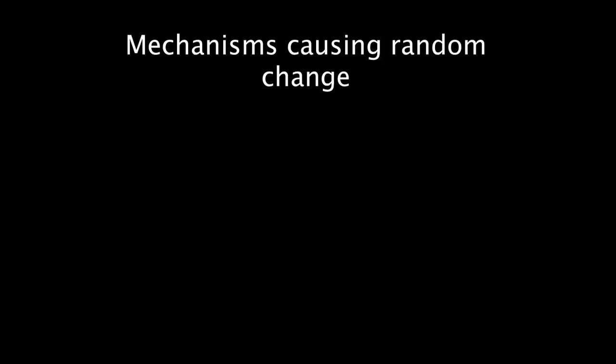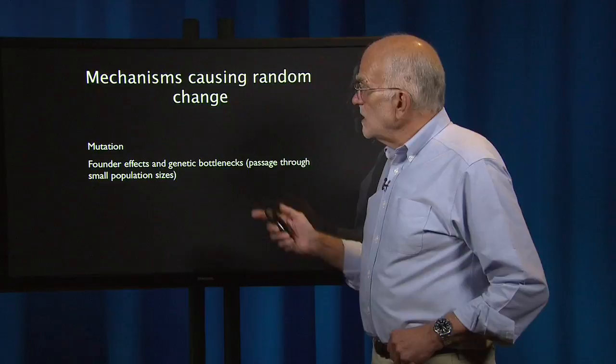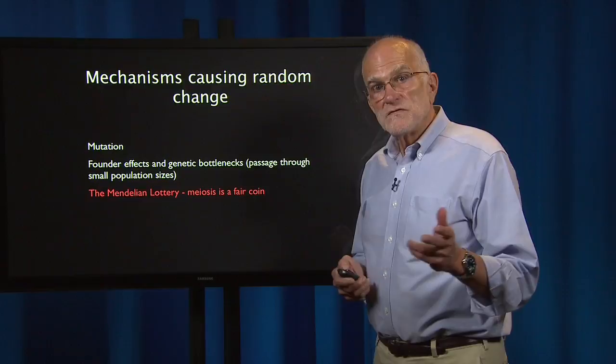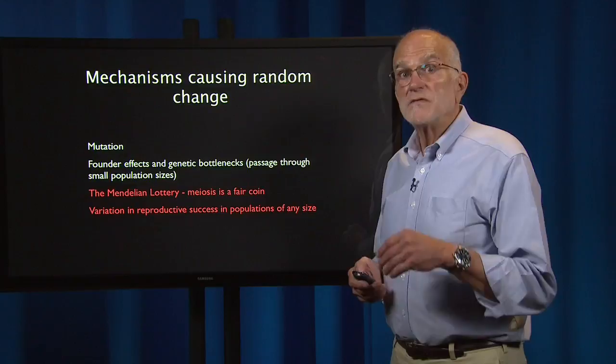So what are the mechanisms that cause random change? There's mutation, and the sense in which mutation is random. There are founder effects and genetic bottlenecks — passaging through small population sizes. There's the Mendelian lottery, the idea that meiosis is a fair coin. And there's variation in reproductive success in populations of any size. The factors contributing to genetic drift are highlighted here and will be followed through the next couple of slides.